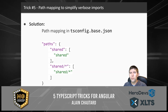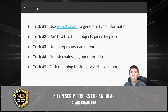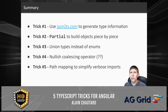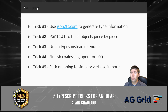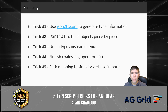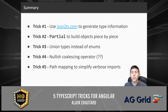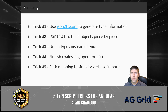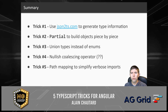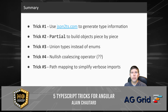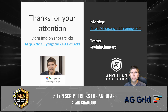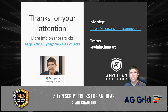These were my five TypeScript tricks: use json2ts.com to generate type information automatically; use Partial to build objects piece by piece; use union types instead of enums because they're more efficient; use the nullish coalescing operator double question mark because it is safer than the logical OR operator; and use path mapping to simplify verbose TypeScript imports. Thanks for your attention and I hope you enjoy the rest of the conference.